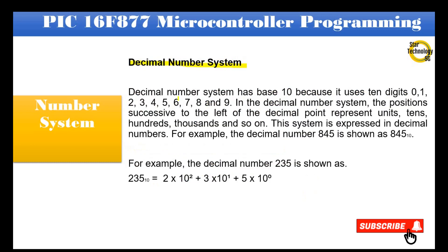Decimal number system: The decimal number system has base 10 because it uses 10 digits: 0, 1, 2, 3, 4, 5, 6, 7, 8, and 9. In the decimal number system, the positions successive to the left of the decimal point represent units, tens, hundreds, thousands, and so on. This system is expressed in decimal numbers. For example, the decimal number 845 is shown as 845 base 10.